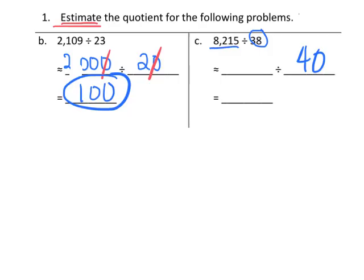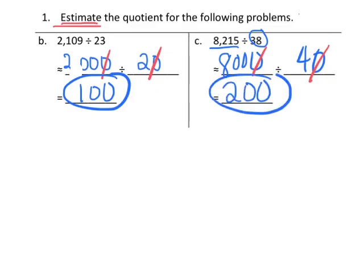And I'm going to think, I can round that down to 8,000. So it becomes 8,000 divided by 40. Cross off a 0, so we have 800 divided by 4, which is 200. And there's my estimation there.